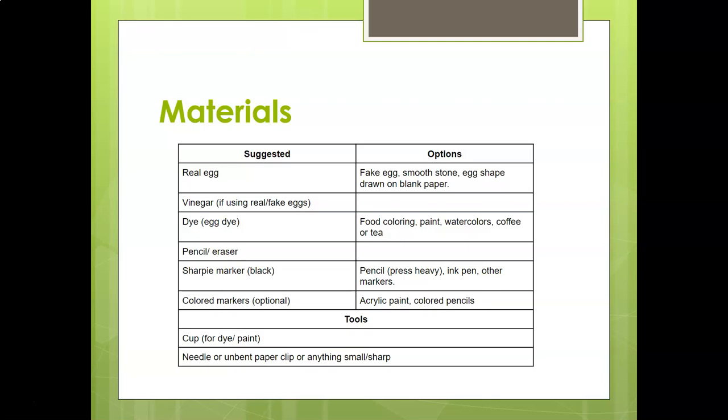If you don't have a real egg, you could use a fake egg. There are a couple of different types — you could use the plastic two-part Easter eggs or some other solid fake Easter eggs. You could use a smooth stone, or you could draw an egg shape on a piece of blank paper.